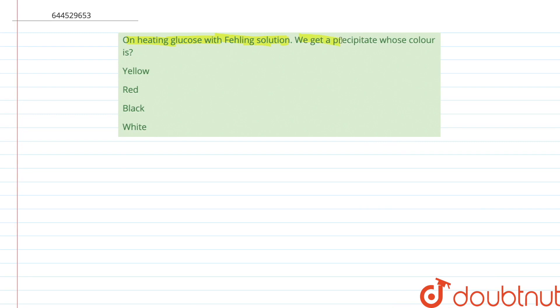We get a precipitate whose color is yellow, red, black, or white. So we have to tell among these four which is the color of the precipitate which is formed when a Fehling solution is put into glucose.